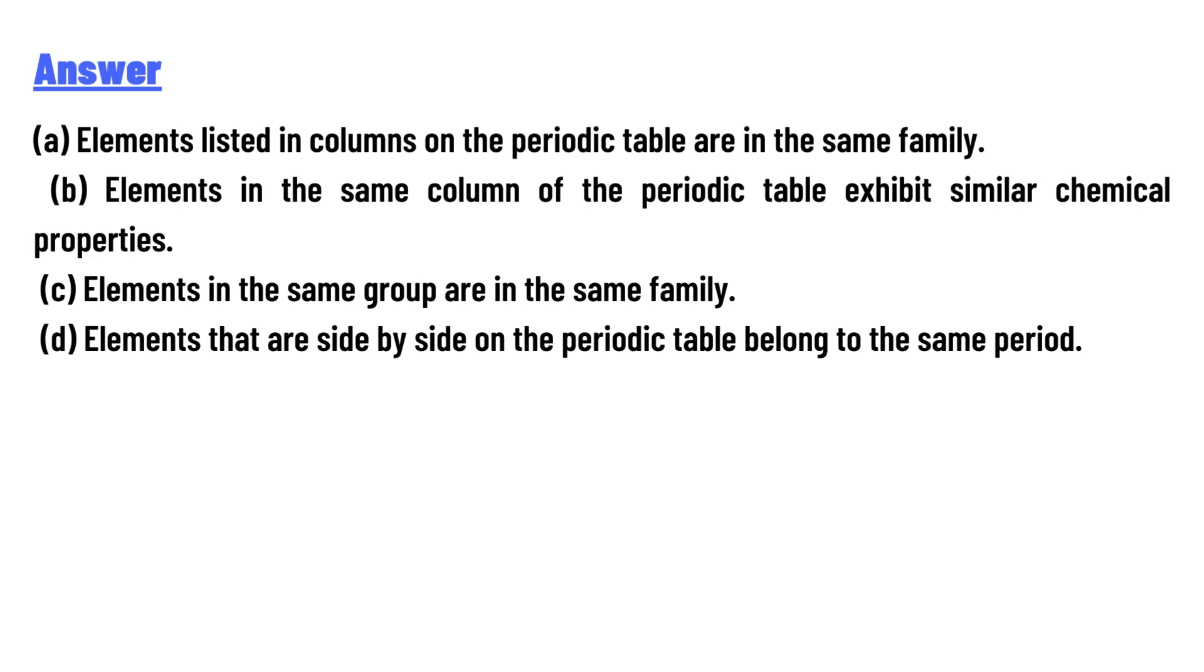And the answer of the question is: (a) Elements listed in columns on the periodic table are in the same family. (b) Elements in the same column of the periodic table exhibit similar chemical properties. (c) Elements in the same group are in the same family. (d) Elements that are side by side on the periodic table belong to the same period.